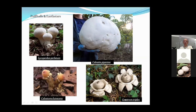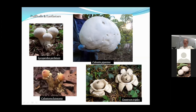Earth stars are really interesting — when young they look like an egg. When the outer shell gets wet, it splits and folds all the way back in a star-shaped pattern, lifting the little puffball into the air. Rain hits the sac, depresses it, and spores puff out through a small opening. One graduate student calculated that the spores from a puffball this size, if grown into another puffball, would cover all the land surface of Earth three feet deep.